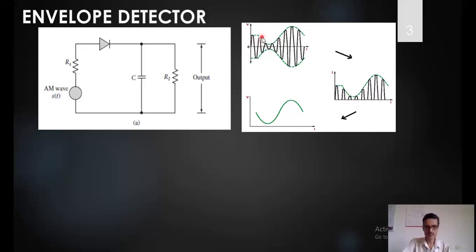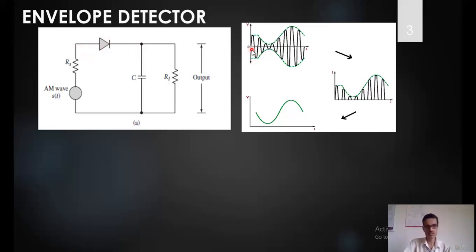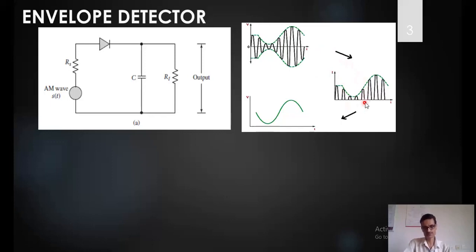When we give this modulated signal with a varying amplitude, the diode will be turned on during the positive half cycle and during the negative half cycle it acts like an open switch — either a closed switch or open switch. During the positive half cycle it acts like a closed switch, so we get only positive cycles. The output of the diode gives only the positive half cycles.